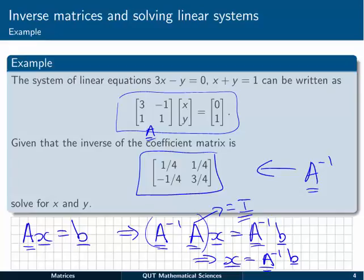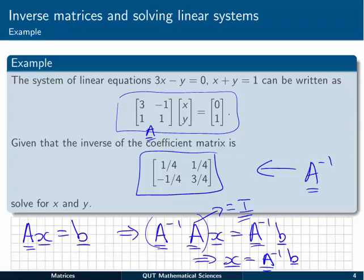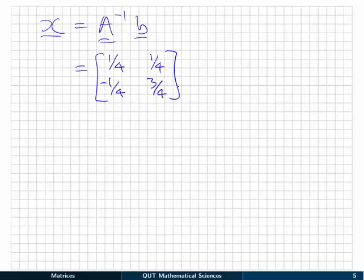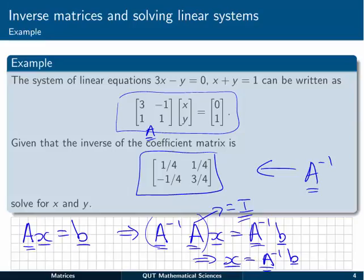That's what we'll do here. The x vector equals A inverse times the b vector. A inverse is [1/4, 1/4; -1/4, 3/4] and the b vector is [0; 1].